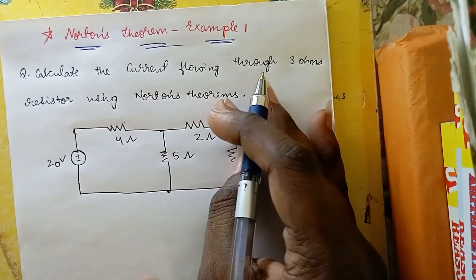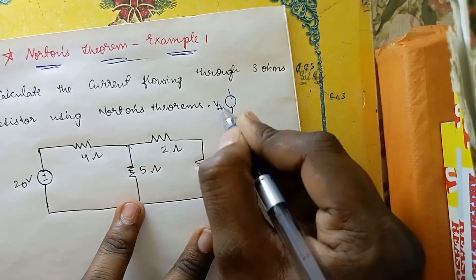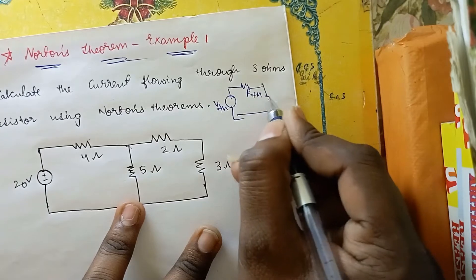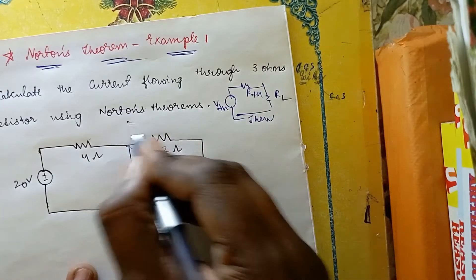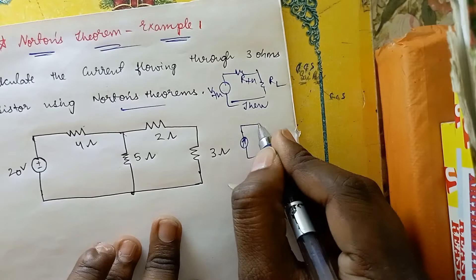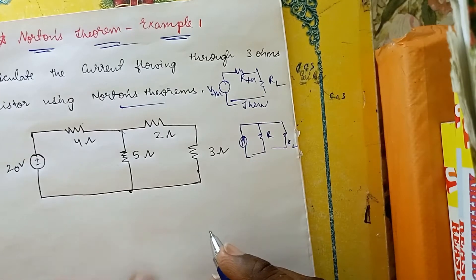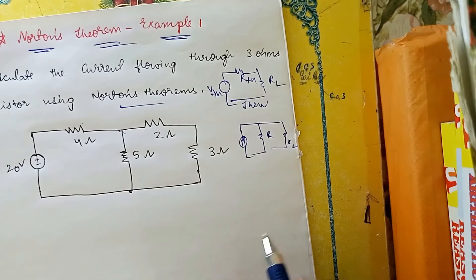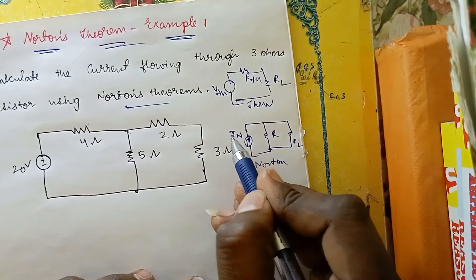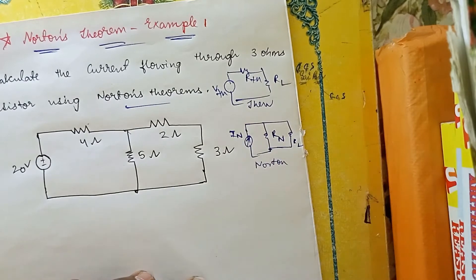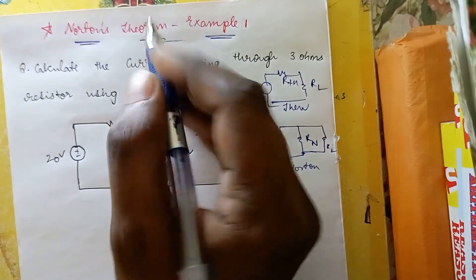In Thevenin's theorem, we have one voltage source Vth, one resistance Rth, and one load resistance. Coming to Norton's theorem, we will have a current source, and in parallel we will have one resistance Rn and one load resistance. In the Norton's equivalent, In indicates Norton's current, Rn indicates Norton's resistance, and RL is the load resistance.